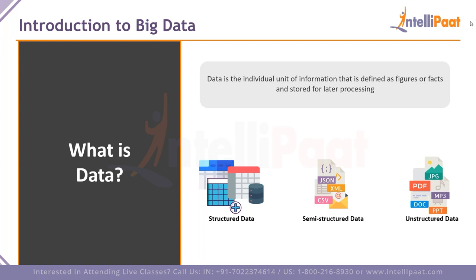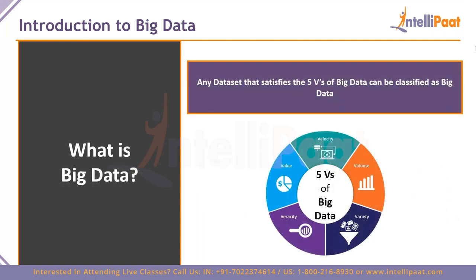So what is big data? Any dataset that satisfies the five V's of big data can be classified as big data. The first V is velocity — the data should be coming in at a really high speed. It could be gigabytes per second, terabytes per hour, or petabytes per day. The rate of incoming data should be extremely high — upwards of gigabytes, into terabytes and petabytes.